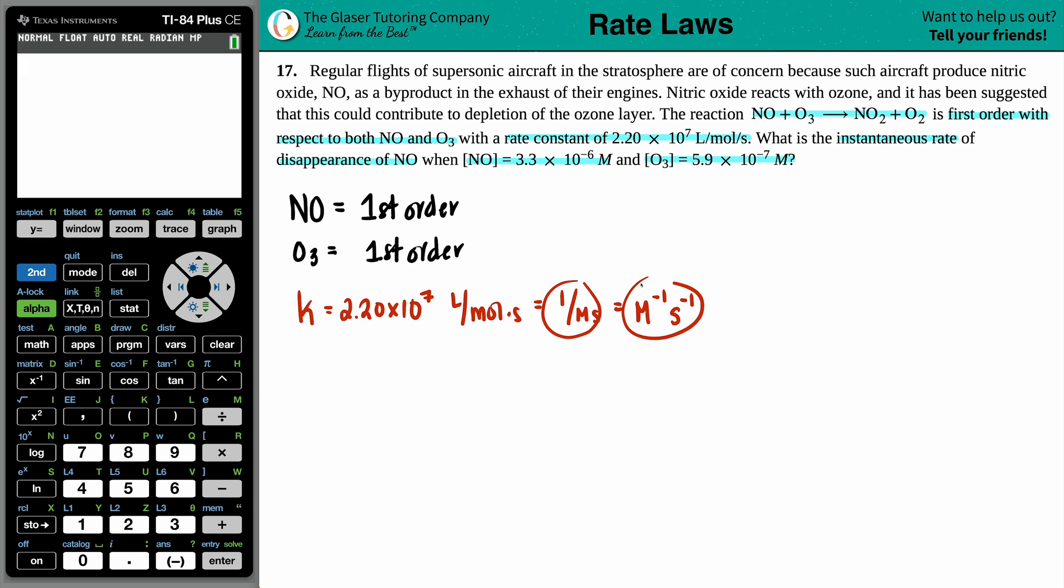Just know that you can see these in various different forms, but don't be scared. It all means the same thing. We have the rate constant, we know they're first order for both of them, and we want to find out that rate. What is the instantaneous rate? Instantaneous rate means at a specific time.